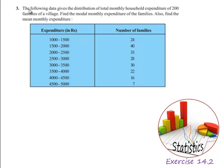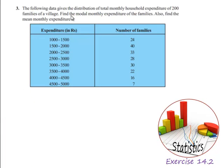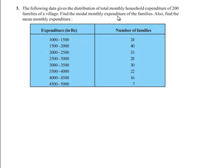Given problem 3, the following data gives the distribution of total monthly household expenditure of 200 families of a village. Find the modal monthly expenditure of the families. Also find the mean monthly expenditure. Here the expenditure is given in rupees and is in grouped data and number of families as frequencies.